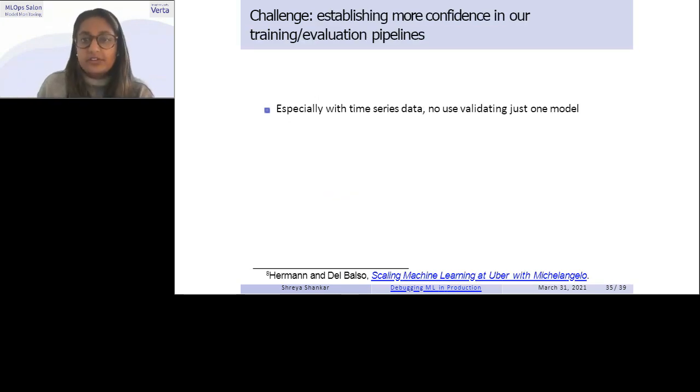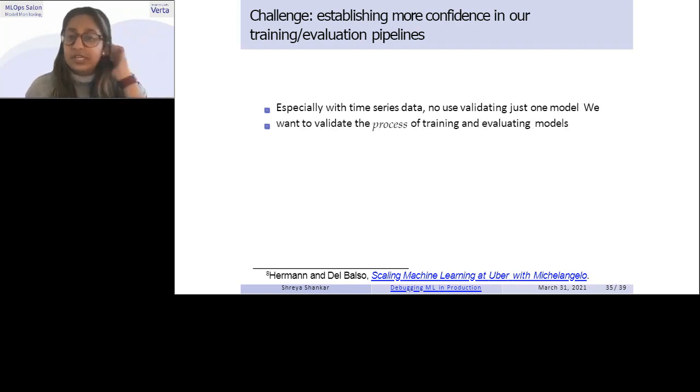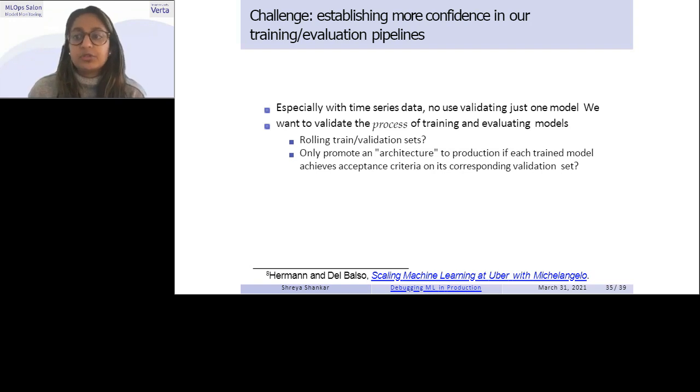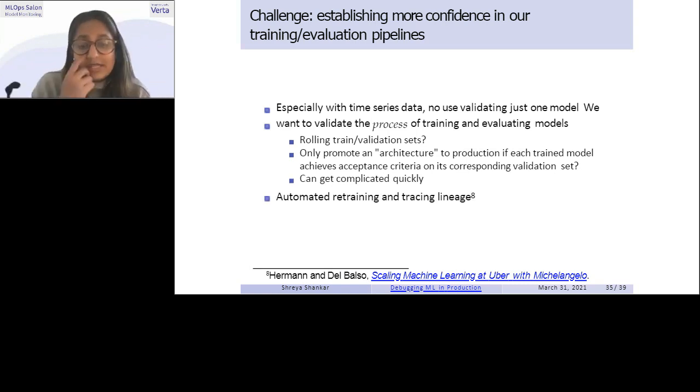So another challenge outside of this distribution shift is establishing more confidence in our training evaluation pipelines. Like maybe we should have done more tests on our model before we deployed it. Especially with time series data. It's not great to validate just one model on just one validation set. We want to validate the process of training and evaluating models. So maybe this means we have a rolling training validation sets instead of one fixed train validation set. Like for example, we might train on January, test on February, train the same architecture on February, test March, train the same architecture on March, test on April, and so forth. So we're validating like the process of this rather than just like evaluating one model binary. But this can get complicated pretty quickly. Like what happens when, I don't know, maybe like your February train model didn't do well, but your March train model did fine. Like there's no like clear cut answer on what to do. Like, do you, do you promote models to production or do you not?